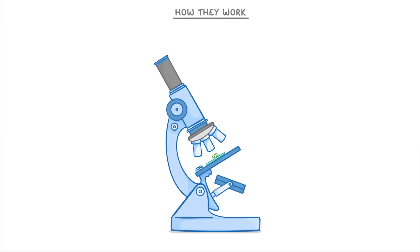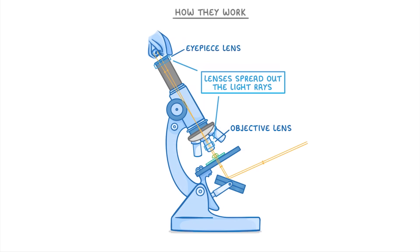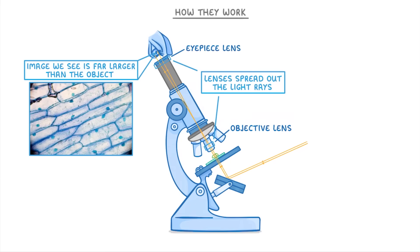If we move on to how they work, light from the room is going to hit this mirror here and be reflected upwards through the object that we want to look at, in this case through our onion cells which remember are sitting there on the stage. Then it'll pass through one of the objective lenses then through the eyepiece lens and finally into our eye which we'll be looking into the eyepiece. And the idea of this whole thing is that the lenses will spread out the light rays so that the image that we see is far larger than the actual object.